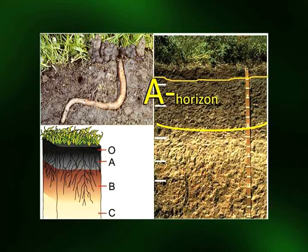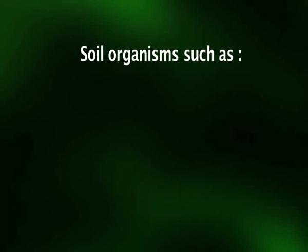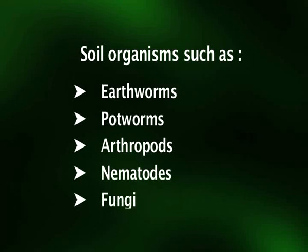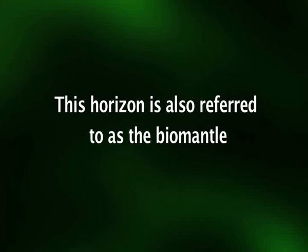The A horizon is composed of a more or less intimate mixture of mineral and organic matter and, being a surface horizon, is the zone in which most biological activity takes place. It is the mineral horizon formed at the surface or below the O horizon. It exhibits obliteration of all or much of the original rock structure and shows either an accumulation of organic matter thoroughly intermixed with the mineral fraction, or shows properties resulting from cultivation, pasturing, or similar activity. The A horizon is an important source of plant nutrition and contains the majority of plant roots. Soil organisms such as earthworms, potworms, arthropods, nematodes, fungi, and many species of bacteria and archaea are concentrated here, often in close association with plant roots. This horizon is also referred to as the biomantle.